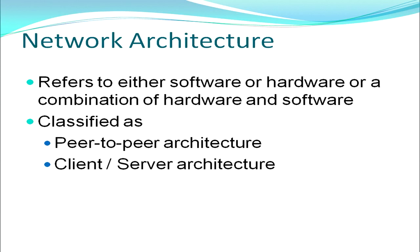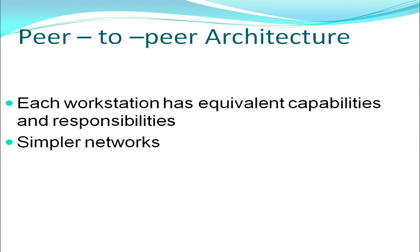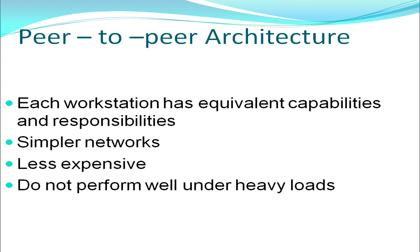We move on to network architecture, which refers to the software, hardware, or combination of both that forms a network. There are two basic types: peer-to-peer architecture and client-server architecture. In peer-to-peer architecture, all nodes or workstations are equal — they have equal capabilities, equal composition, and share equal responsibilities. These are simpler, less expensive networks, easy to implement. But when network load is heavy, they do not perform very well.